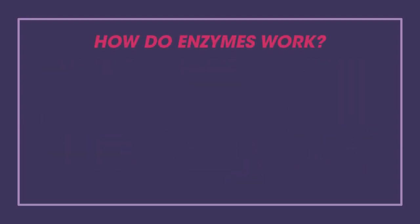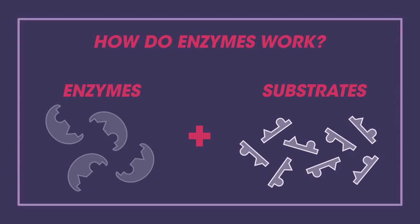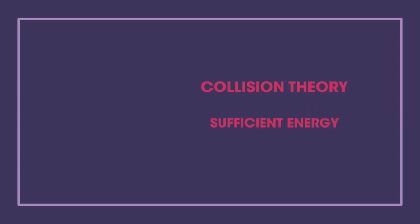So how do enzymes work? Enzymes work in conjunction with substrates. The enzymes and substrates are always moving and occasionally they collide at the right speed and orientation so that the substrate fits into the enzyme at the active site. Collision theory dictates that collision must occur with sufficient energy and in a specific orientation for a reaction to occur.